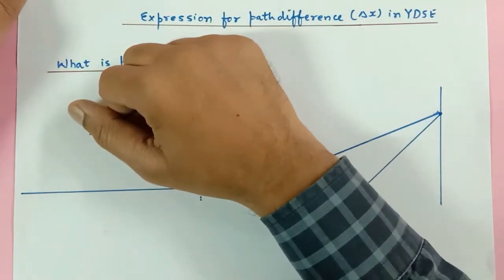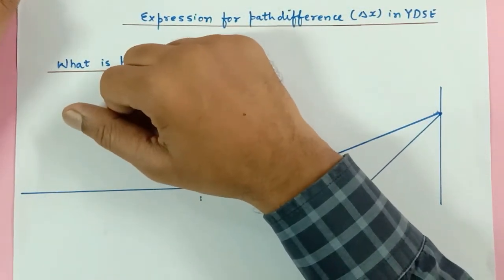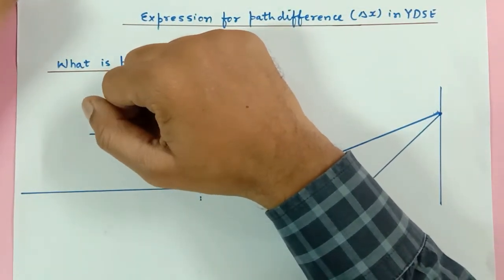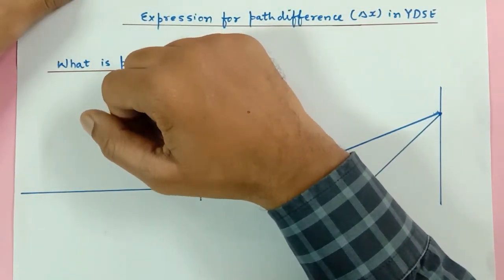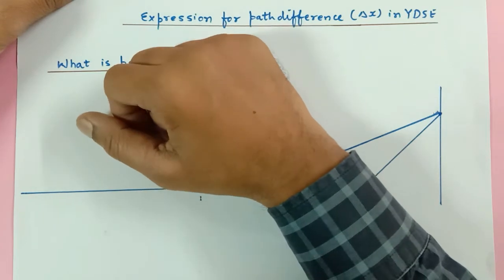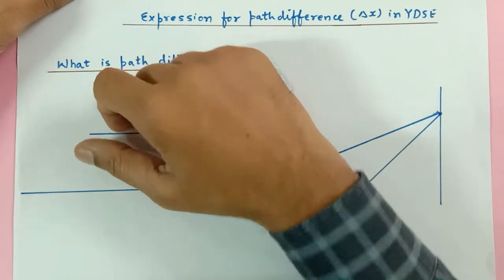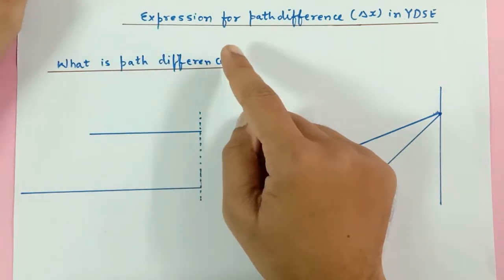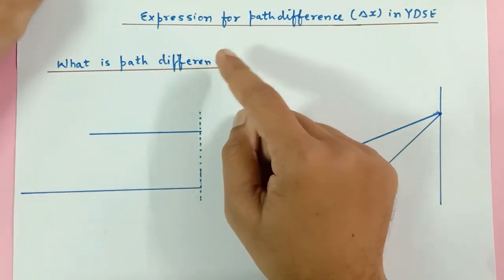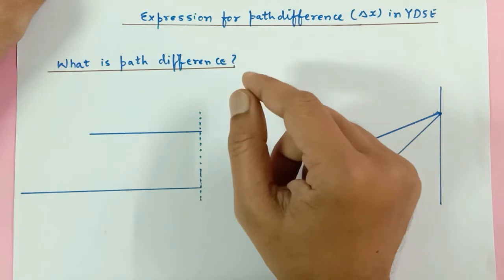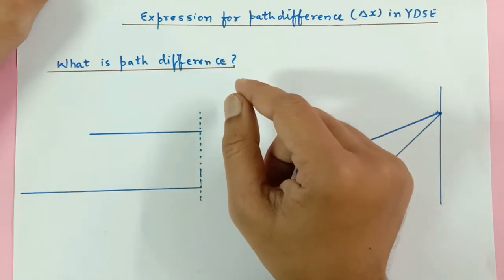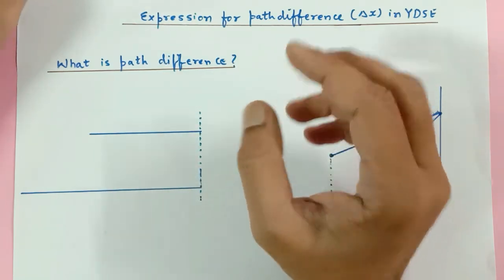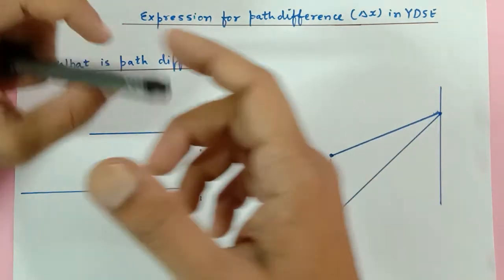Hello scientific geniuses! We will be continuing our discussion on the lecture series of interference. Today we will be discussing the derivation of the equation of path difference and what path difference is.